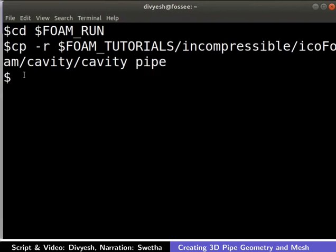In this tutorial, we don't need to define initial and boundary conditions in zero time. Type this command to rename zero folder to zero.orig.